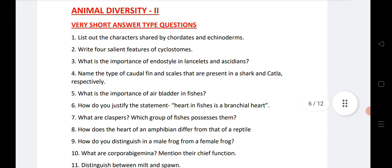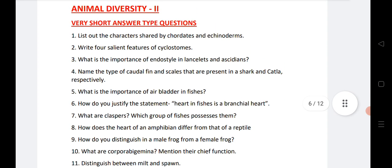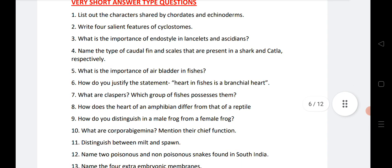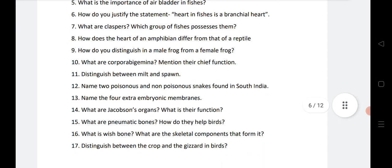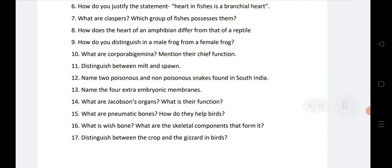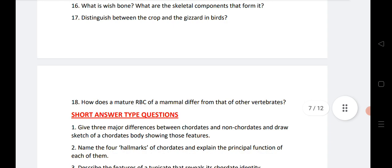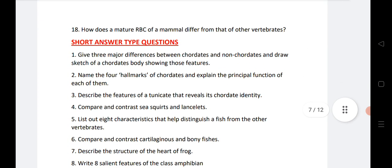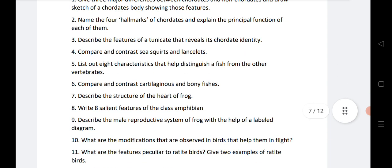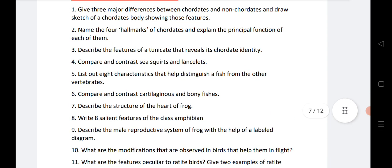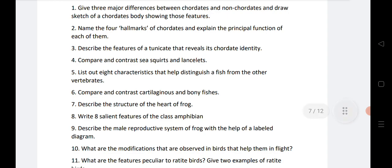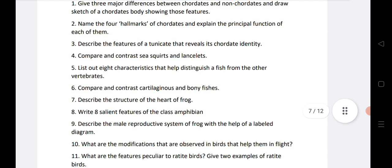Next Animal Diversity, 2 VSAQs questions, 1 to 10, then after that 11 to 17. Total 18 VSAQs we have given from Animal Diversity 2. Next is SAQs, total 11 SAQs we have given here. Very important from Animal Diversity, very helpful for you to get good marks.